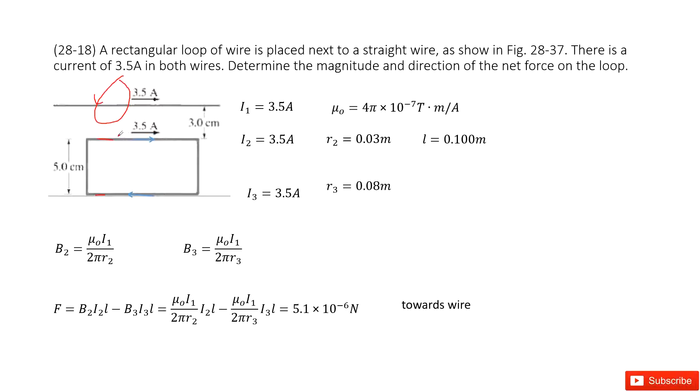So now we can first determine the magnetic fields at position 2 and position 3. We need to get B2. B2 is mu dot I1 divided by 2 pi R2.